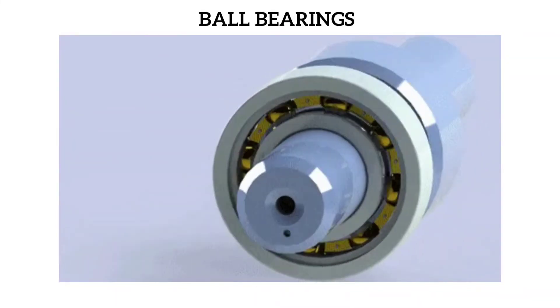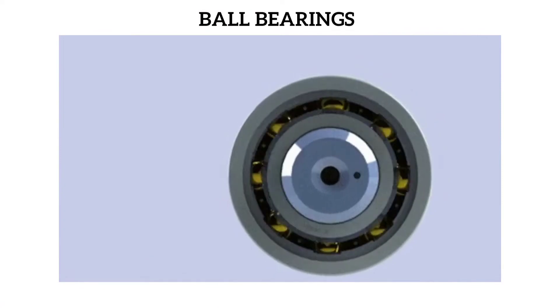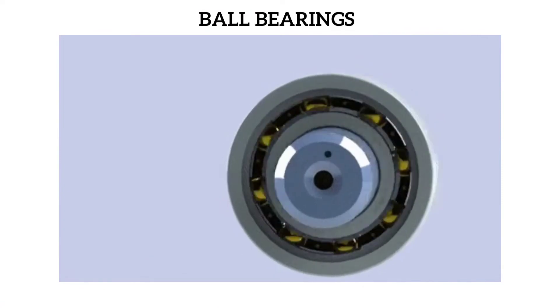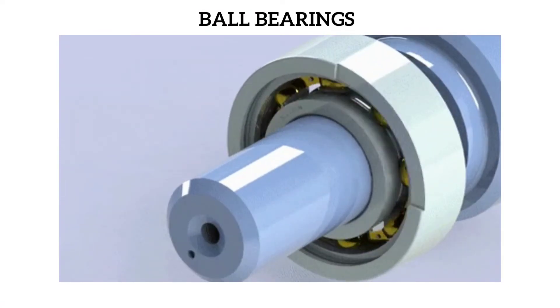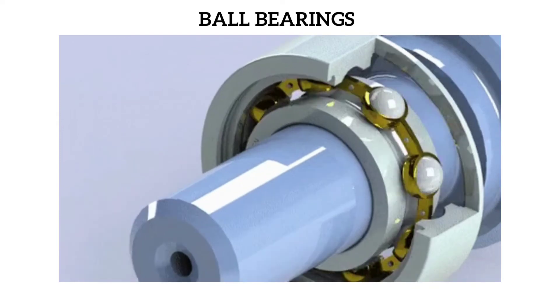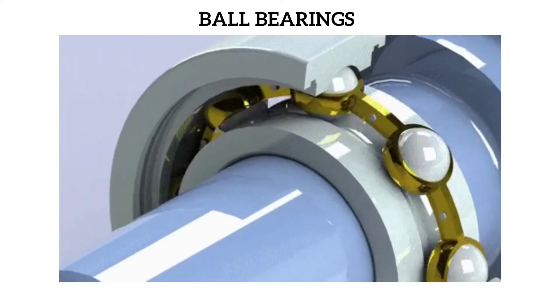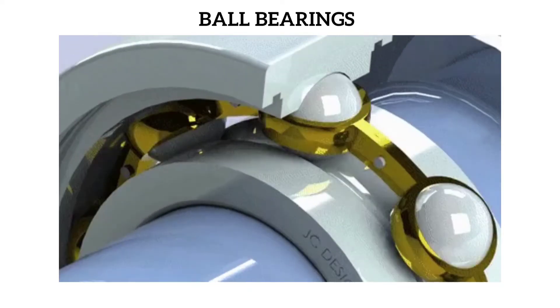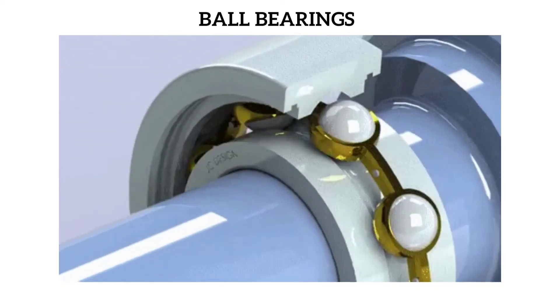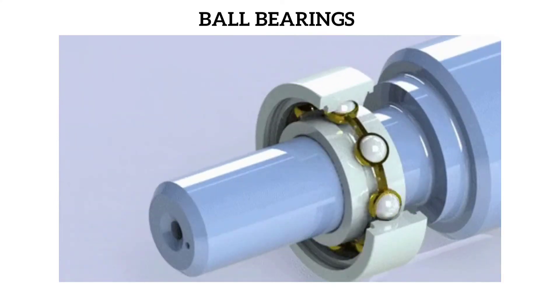Ball bearings: a ball bearing is a type of rolling element bearing that uses balls to maintain the separation between the bearing races. One race is stationary and the other is attached to the rotating assembly. Ball bearings reduce rotational friction and support radial and axial loads.